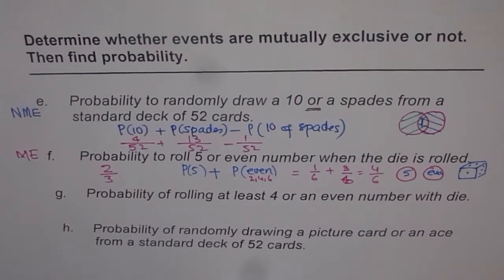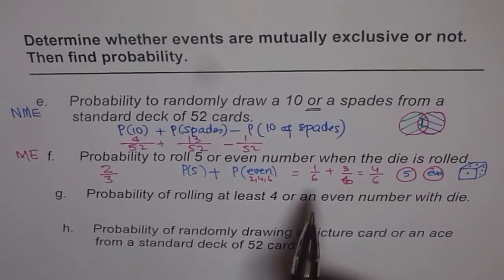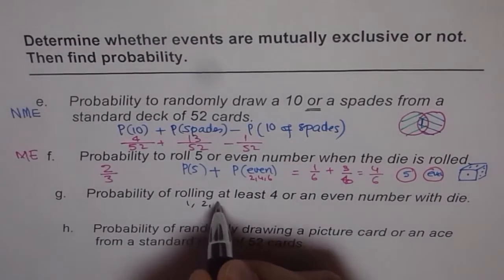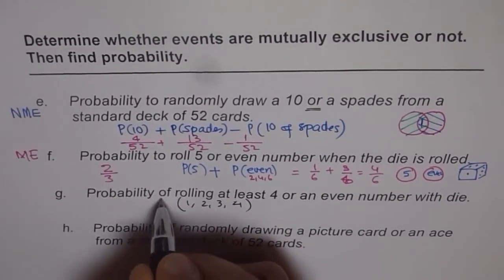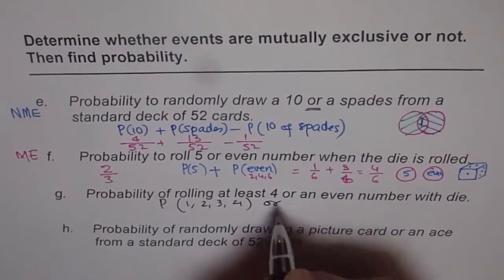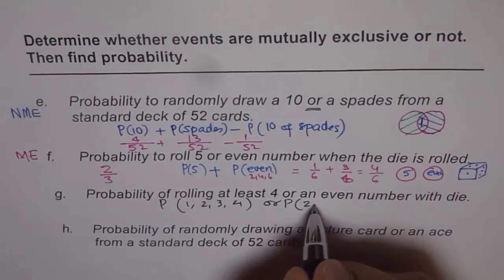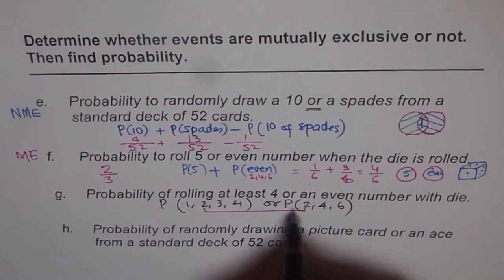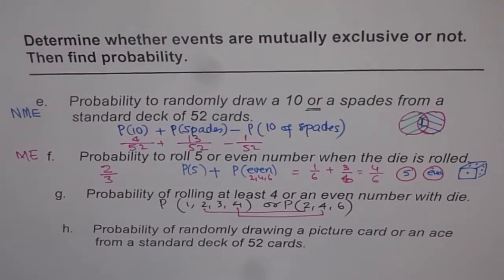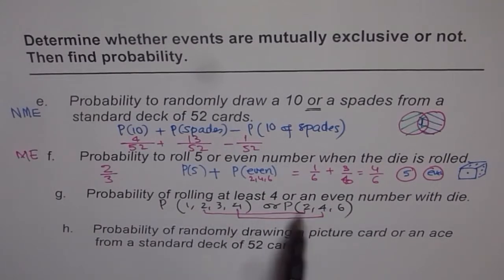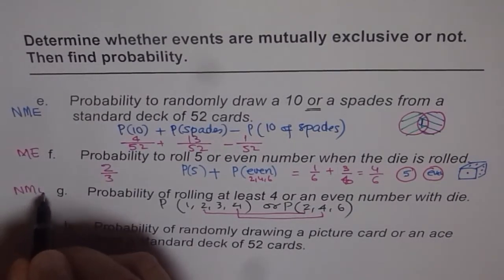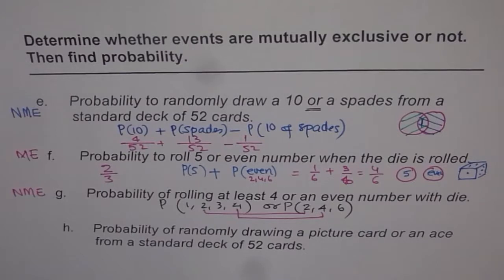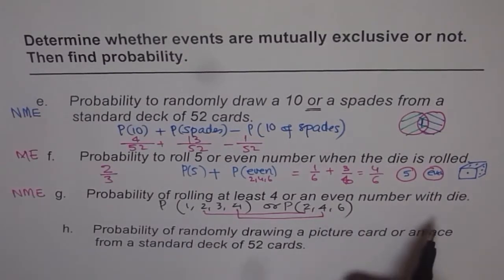Part G: probability of rolling at least 4 or an even number. At least 4 means the set {1, 2, 3, 4} — wait, actually at least 4 on a die means 4, 5, or 6 — but let us identify the set correctly. The even numbers are 2, 4, and 6. You can see there are common elements: 2 and 4 appear in both sets. So we have to remove these overlapping combinations — they are repeated. Therefore, this is not mutually exclusive. I will leave this question for you to work out.